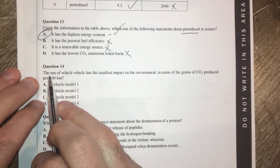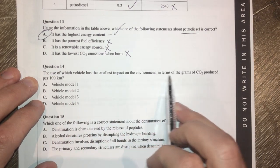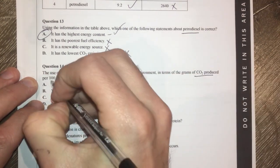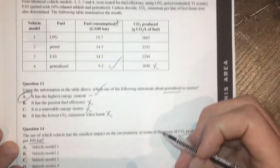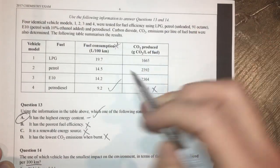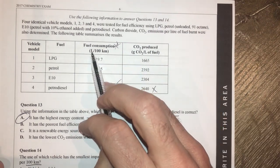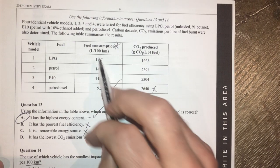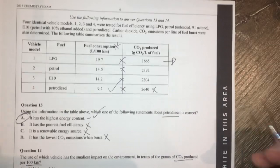Question 14. The use of which vehicle has the smallest impact on the environment in terms of CO2 produced per 100 kilometres driven. So we want to look at how much CO2 is produced per 100 kilometres. This is per litre. So if we're going to look at litres per kilometre, we're going to times these two together and work out which one has the smallest one.